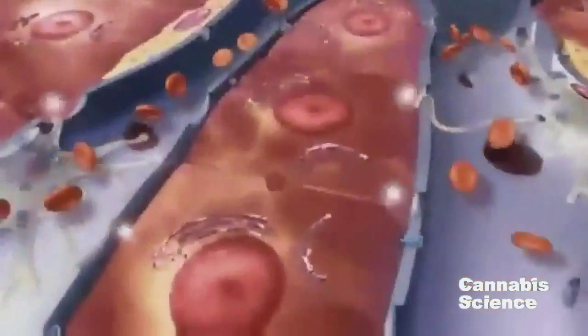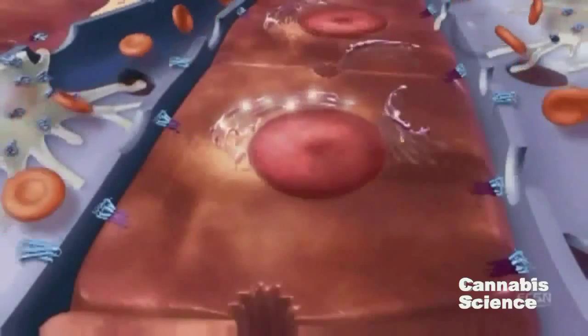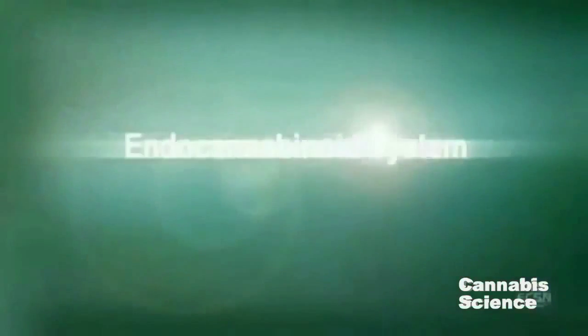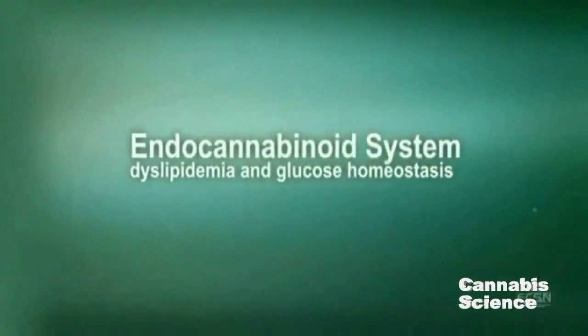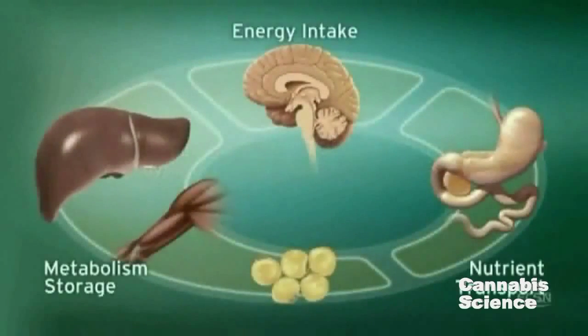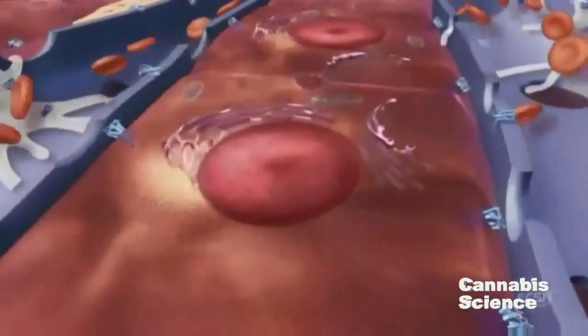In the liver, ECS stimulation can lead to lipogenesis through the activation of hepatic lipogenic enzymes and increased fatty acid synthesis. Chronic stimulation of the ECS is associated with dyslipidemia. Activation of CB1 receptors increases expression of SREBP1C, a lipogenic transcription factor, and increases fatty acid synthesis.